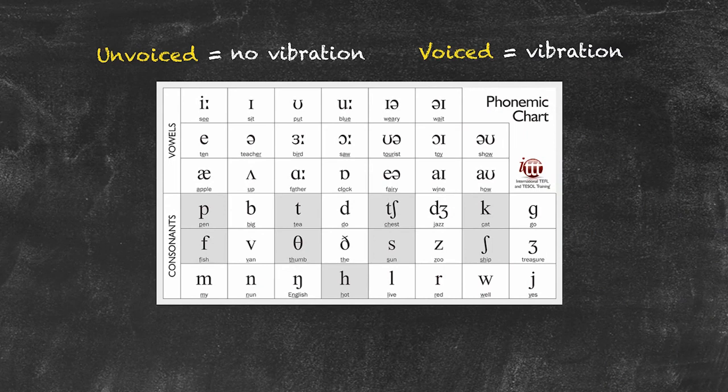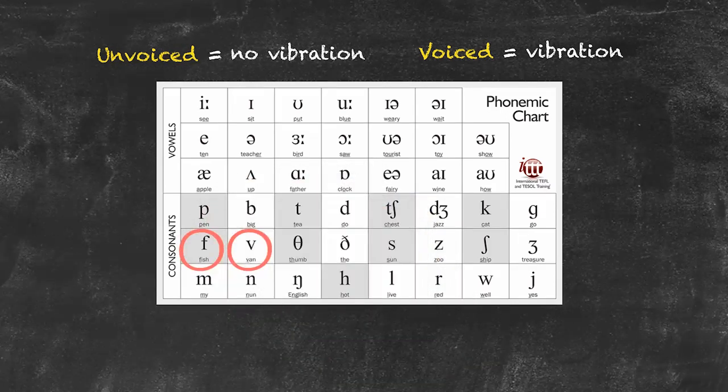Let's look at a few phonemes which are quite similar in the other aspects of its production, but the only difference is in whether or not it's voiced or unvoiced. Take for instance the F and V sounds.